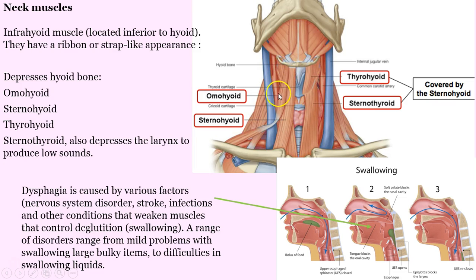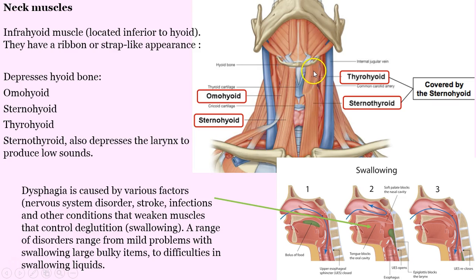Here's the omohyoid on the lateral surface — these are somewhat superficial. And then we have the sternohyoid. Now if we pull the sternohyoid away and remove it, we can see the deep muscles, which include the thyrohyoid — see how it's a little broader on this side — and the sternothyroid.